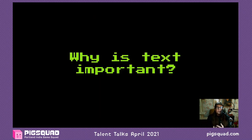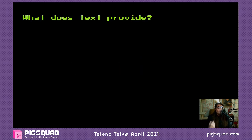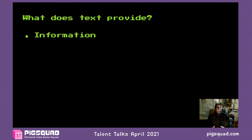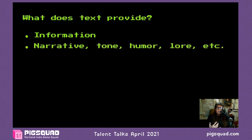Let's pause and talk about why text is important in the context of games. What does text provide? It provides information overall — whether about the rules and systems of the game, the game's world, or its characters. Text is always providing the player with more information, and that can be narrative, tone, humor, lore — anything like that, big and small.